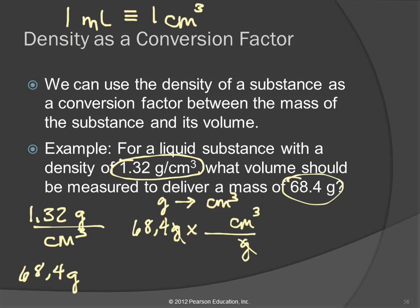There's no number on the top with the cubic centimeters — it's a 1. So we get 68.4 times 1 divided by 1.32. How many significant figures should the answer have? Both 68.4 and 1.32 have 3 significant figures, and 1.32 is not exact, so our answer should have 3 significant figures. The calculator gives 51.81818...